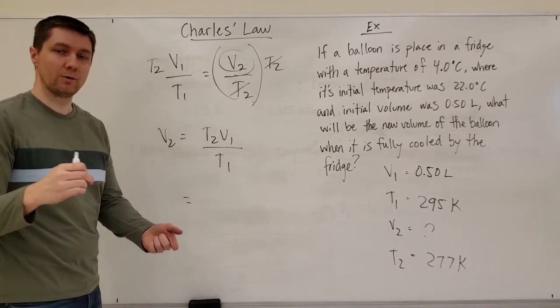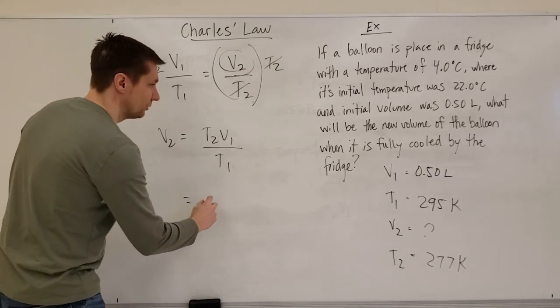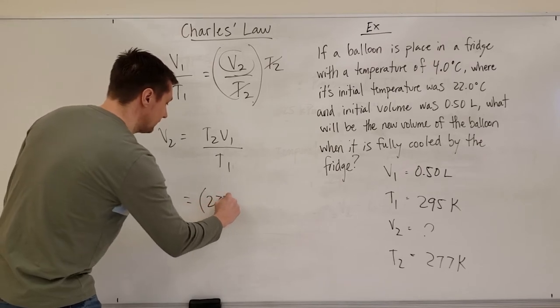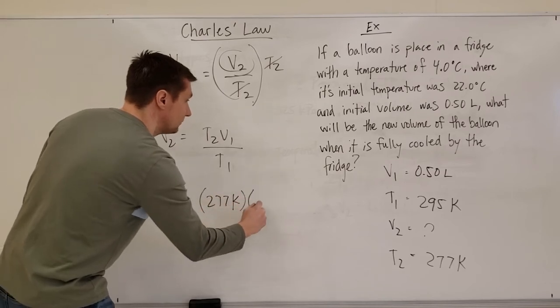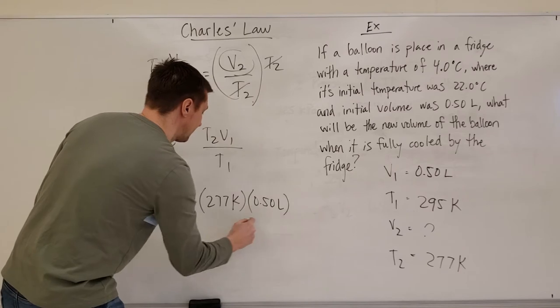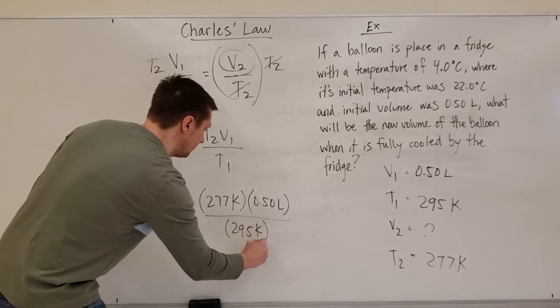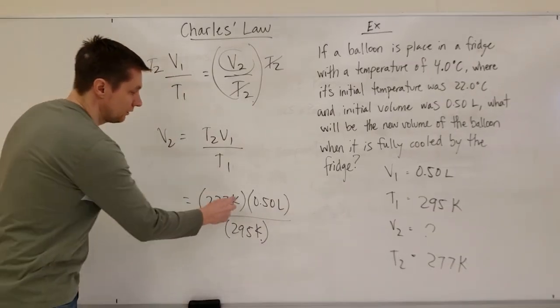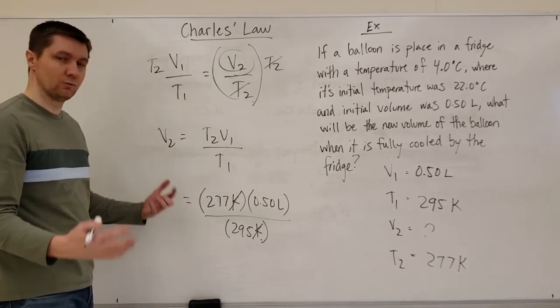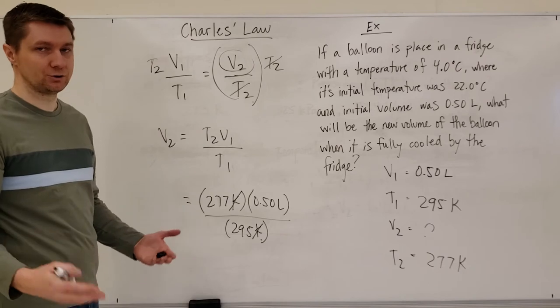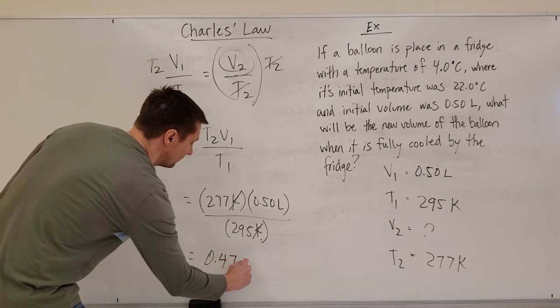Then I can plug those numbers in. Remember, show your work and make sure the units are consistent. So T2 is 277 Kelvin times 0.050 liters divided by T1 is 295 Kelvin. Make sure you're putting the units in to the formula. It's very important that you show your units, a really good habit to get into. And you plug this in and you end up with 0.47 liters.